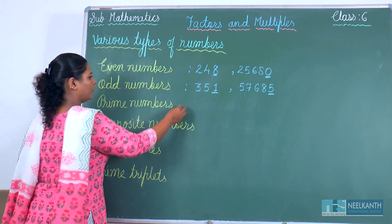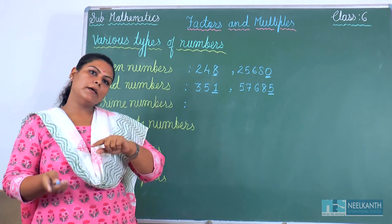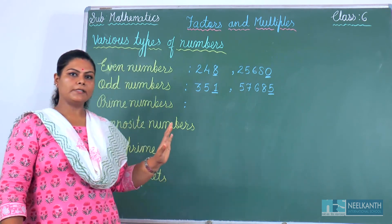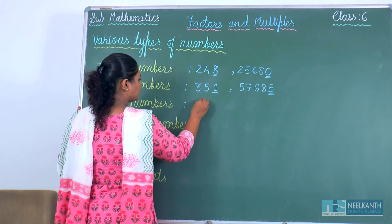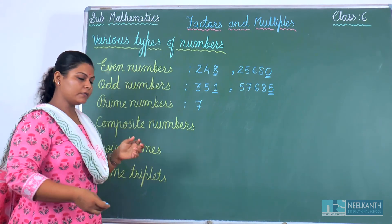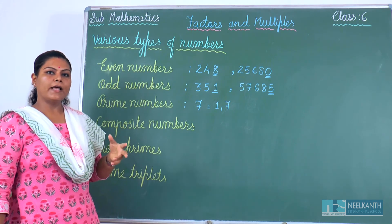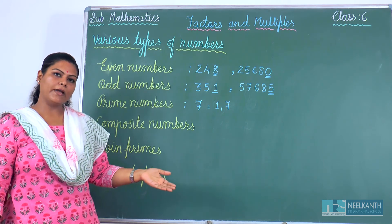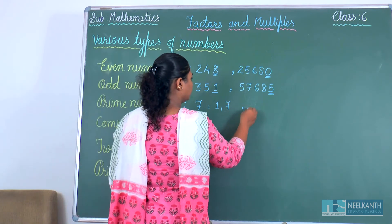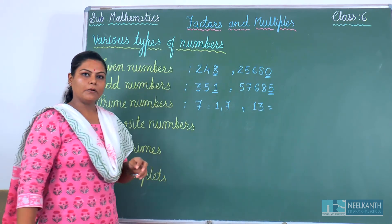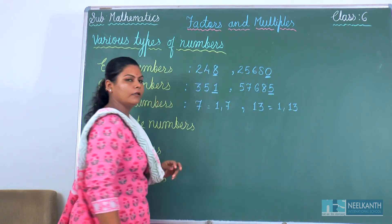Now let's see what prime numbers are. A number which has only 1 and the number itself as factors is called a prime number. For example, 7 — the factors of 7 are 1 and 7 only, so 7 is a prime number. One more example: 13 is also a prime number because the factors of 13 are 1 and 13 only.